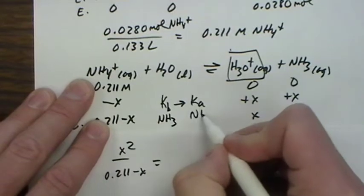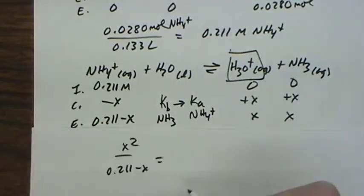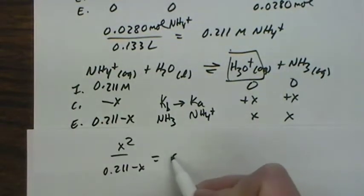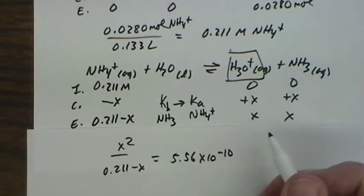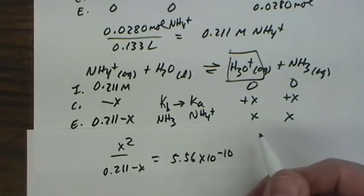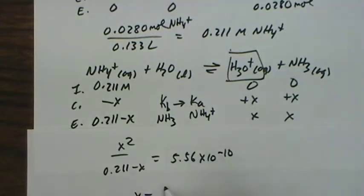And that is going to turn out to be 5.56 times 10 to the minus 10. And how we find it is KW, 10 to the minus 14, divided by 1.8 times 10 to the minus 5 for ammonia. And then we have H3O+ that is produced. So we can go directly to pH.